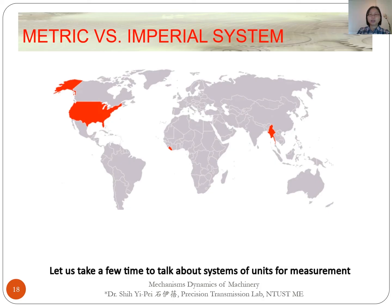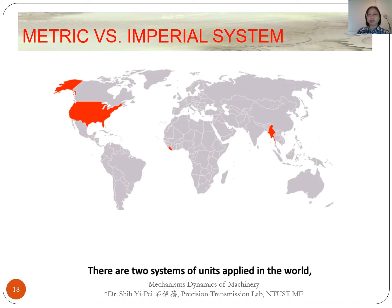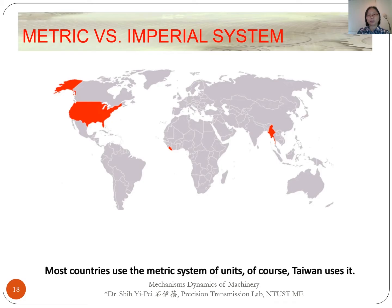Let us take a few moments to talk about systems of units for measurement. There are two systems of units applied in the world: the metric system and the imperial system. Most countries use the metric system of units.